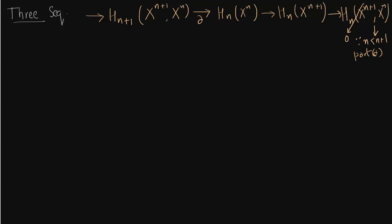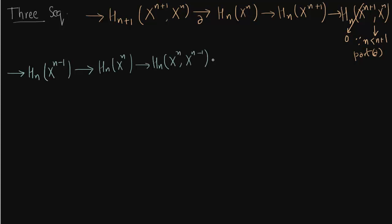Now we draw the long exact sequence of the pair (Xn, Xn-1), starting with Xn-1. The delta map reduces the index by 1, giving Hn-1. By part b, the first map is zero because k equals n and n is greater than n-1, meaning n is greater than the dimension.